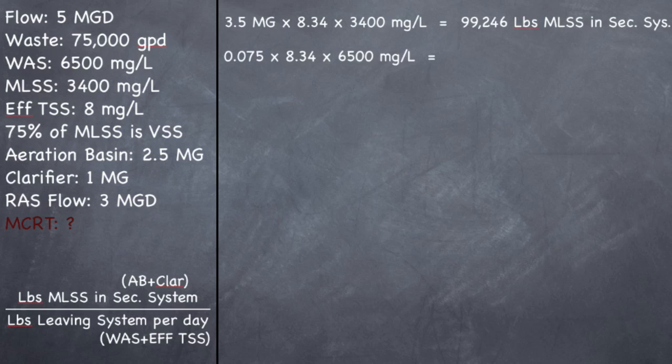Now let's find the bottom part, pounds leaving the system per day. So we got 0.075 million gallons. Now again, you might be wondering where did you get this number? Well I'm wasting 75,000 gallons per day. If I divide 75,000 by 1 million, it turns out to 0.075 million gallons. So 0.075 times 8.34 pounds per gallon times 6,500 milligrams per liter, which is my WAS, my waste-activated sludge concentration. When you multiply that, you should get 4,066 pounds wasted per day.